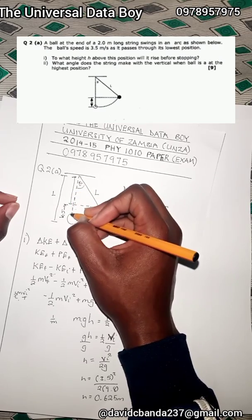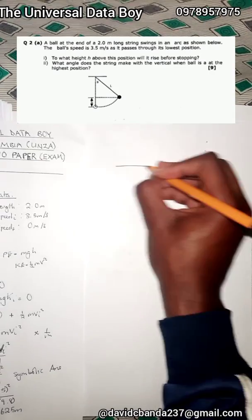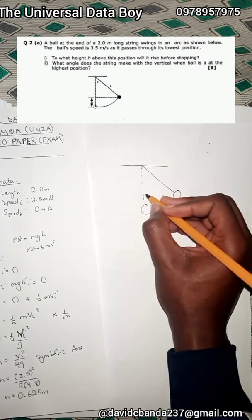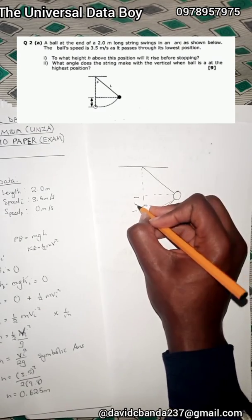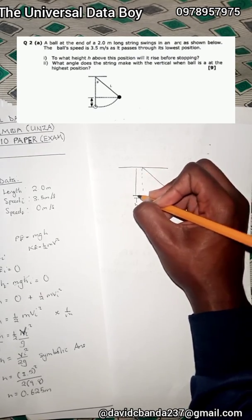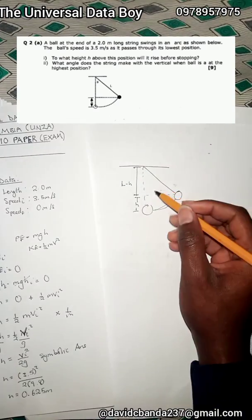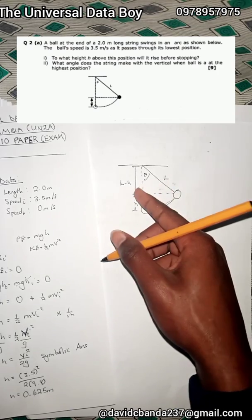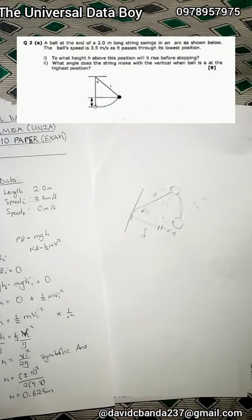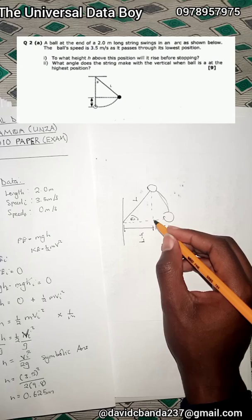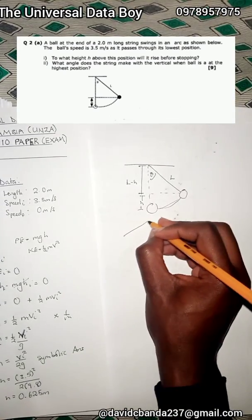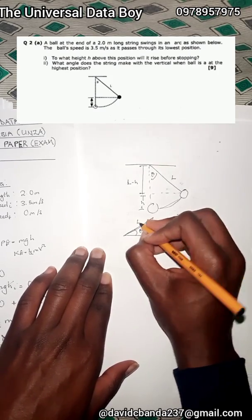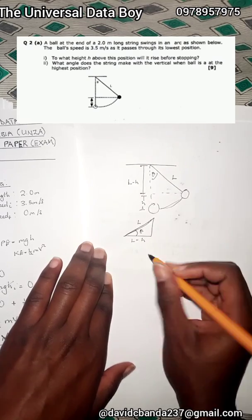When we add l minus h plus h, we get l — that checks out. Drawing the triangle: we have the hypotenuse l (the string), the vertical side l minus h, and the angle theta at the top. The right angle is at the bottom of the vertical side. If this type of question ever comes in an exam, draw this triangle to show you understand the geometry.